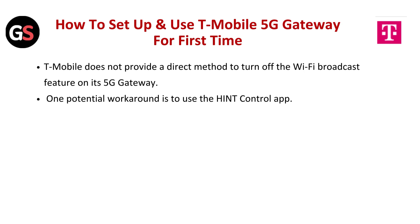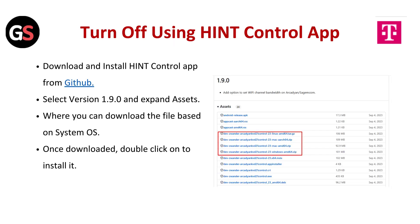T-Mobile does not provide a direct method to turn off the Wi-Fi broadcast feature on its 5G gateway. One potential workaround is to use the HINT control app.